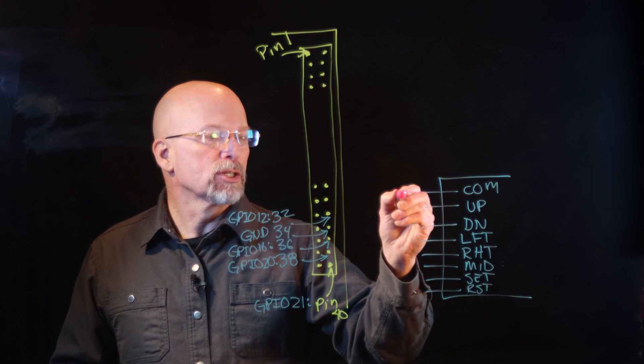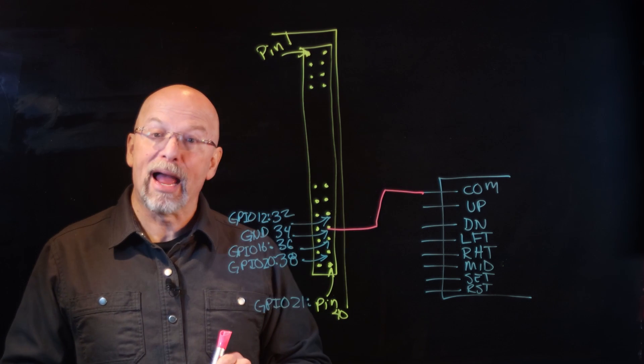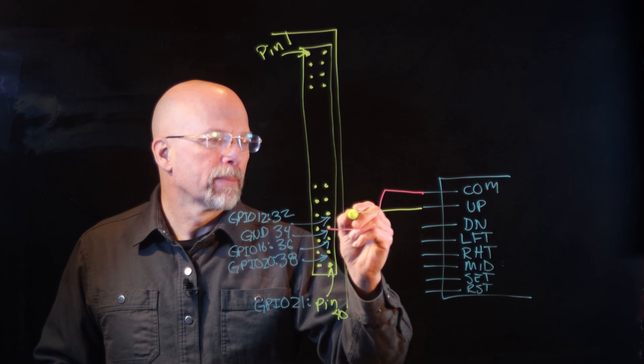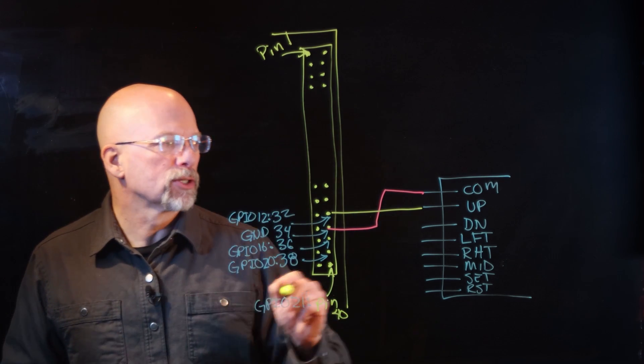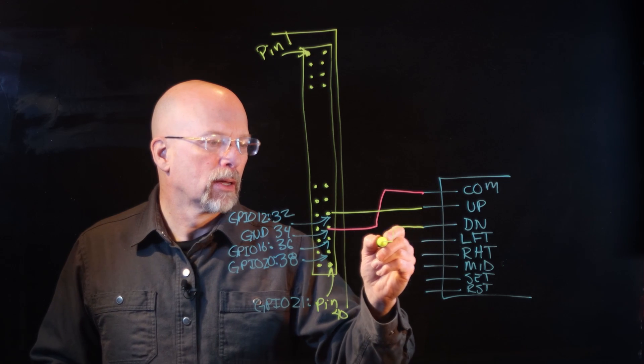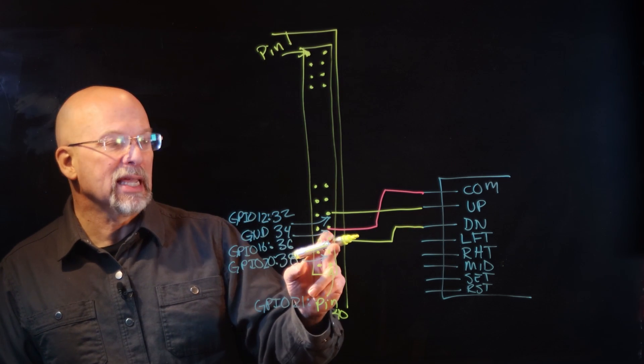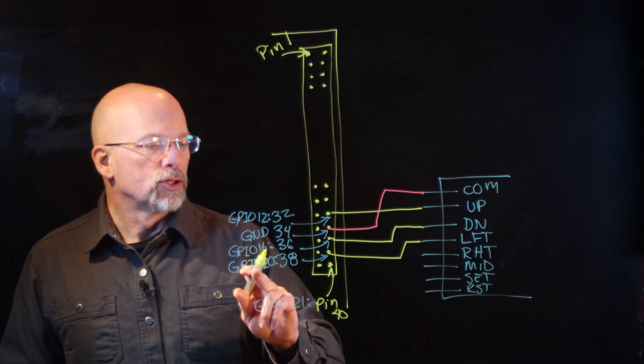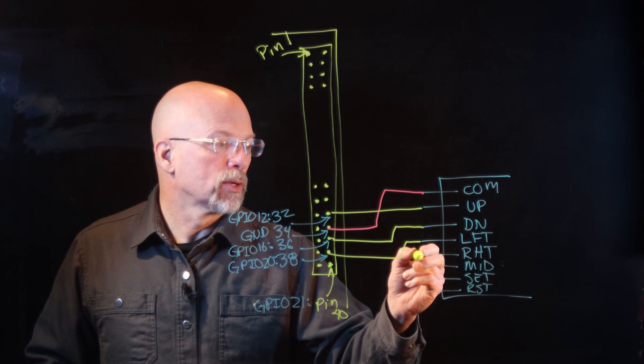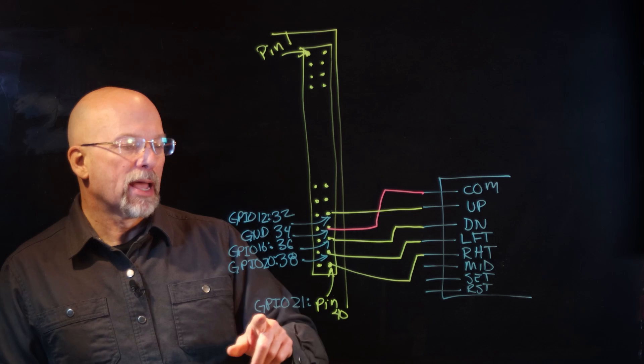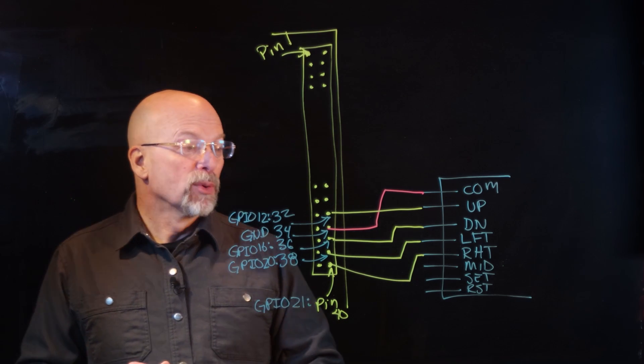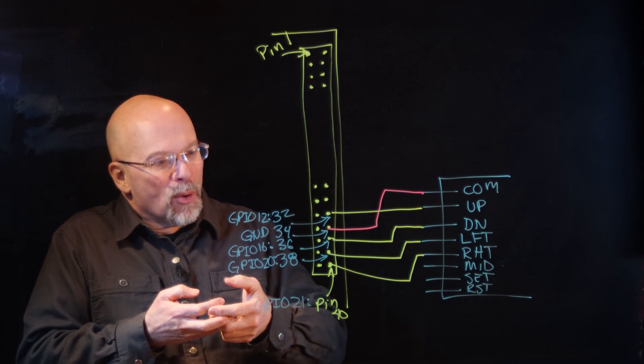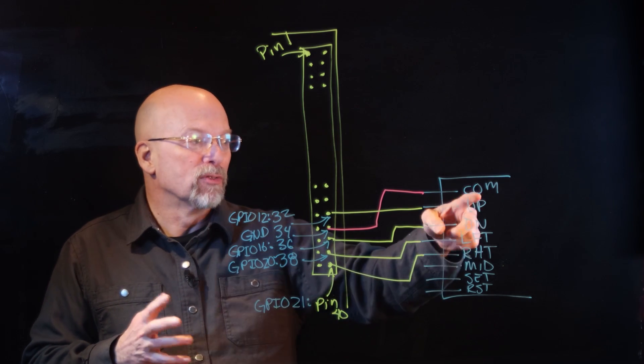Now common, what we're going to do is we are going to connect that to our ground, pin 34. What I'm going to do is I'm going to connect up to GPIO 12, pin 32. I'm going to connect down to GPIO 16, pin 36. I'm going to connect left to GPIO 20, pin 38. And I'm going to connect right to GPIO 21, pin 40. And in doing so, we should be able to do basically a simple joystick application where we can detect whatever position I've moved, up, down, left, right.